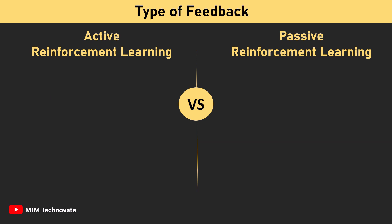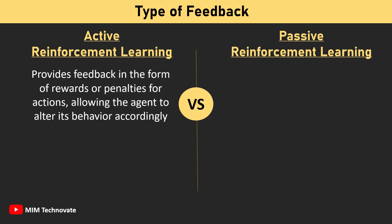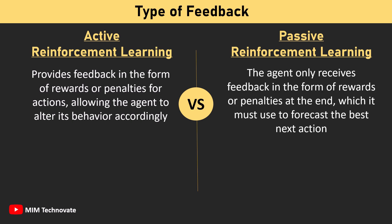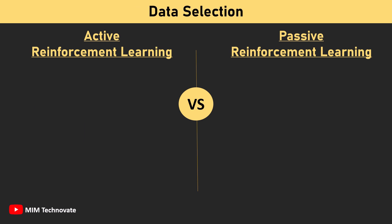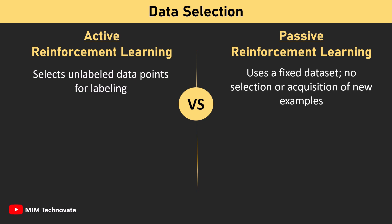In terms of type of feedback, Active Reinforcement Learning provides feedback in the form of rewards or penalties for actions, allowing the agent to alter its behavior accordingly. In Passive Reinforcement Learning, the agent only receives feedback in the form of rewards or penalties at the end, which it must use to forecast the best next action. For data selection, Active Reinforcement Learning iteratively selects unlabeled data points for labeling, whereas Passive Reinforcement Learning uses a fixed dataset with no selection or acquisition of new examples.